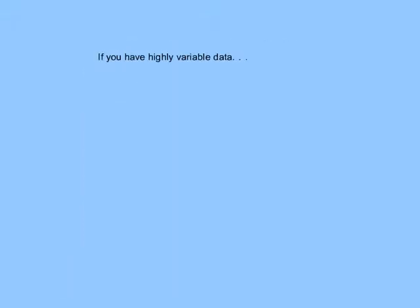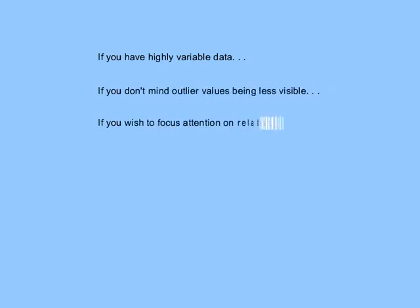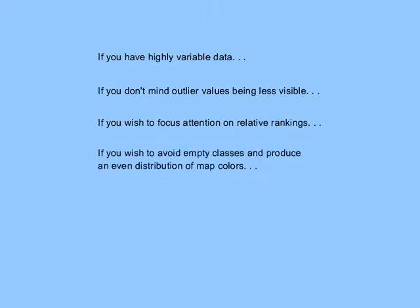If you have highly variable data, if you don't mind outlier values being less visible, if you wish to focus attention on relative rankings, if you wish to avoid empty classes and produce an even distribution of map colors, then use quantiles to map your data.